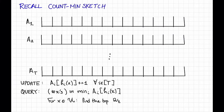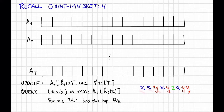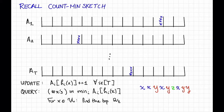Let's quickly recall the count min sketch data structure that we saw in the previous video. We have these t arrays, and when we see an input stream like x, x, y, x, y, z, x, y, y, or something like that, we'll process each item in turn by hashing them to the appropriate bucket and incrementing a counter. For example, if x hashes here in these different arrays, then after we see this whole string, we'll have seen four x's, so these counters would be four. Notice that we're not storing x itself — I'm just drawing it that way to keep track of where the different counters are coming from.